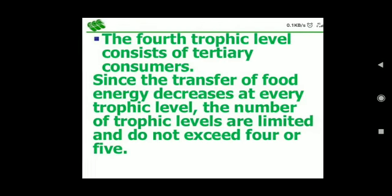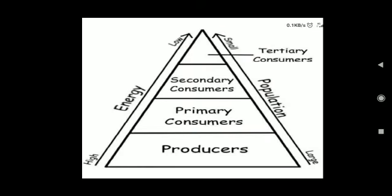The fourth trophic level consists of tertiary consumers. Since the transfer of food energy decreases at every trophic level, the number of trophic levels is limited and does not exceed four or five. So basically a food chain consists of three or four steps.